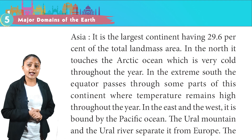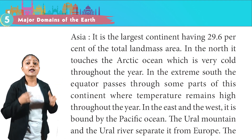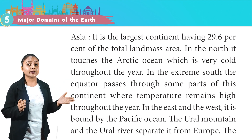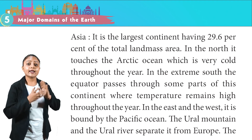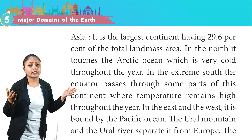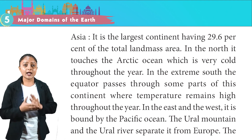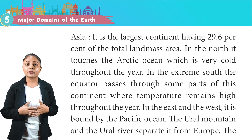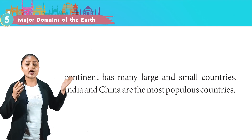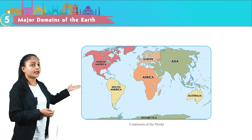Asia is the largest continent, having 29.6% of the total landmass area. In the north it touches the Arctic Ocean, which is very cold throughout the year. In the extreme south, the equator passes through some parts of this continent where temperature remains high throughout the year. In the east and the west, it is bounded by the Pacific Ocean. The Ural Mountains and the Ural River separate it from Europe. India and China are the most populous countries of this continent.